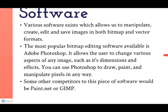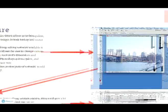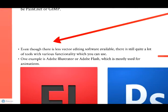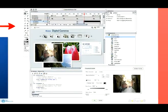Software. Various software exists which allows us to manipulate, create, edit and save images in both bitmap and vector formats. The most popular bitmap editing software available is Adobe Photoshop. It allows the user to change various aspects of any image such as its dimensions and effects. You can use Photoshop to draw, paint and manipulate pixels in any way. Some other competitors would be Paint.net or Gimp. Here is a screenshot taken from Photoshop. Even though there is less vector editing software available, there are still quite a lot of tools with various functionality. One example is Adobe Illustrator or Adobe Flash, which is mostly used for animations. Here is a screenshot taken from Adobe Flash.